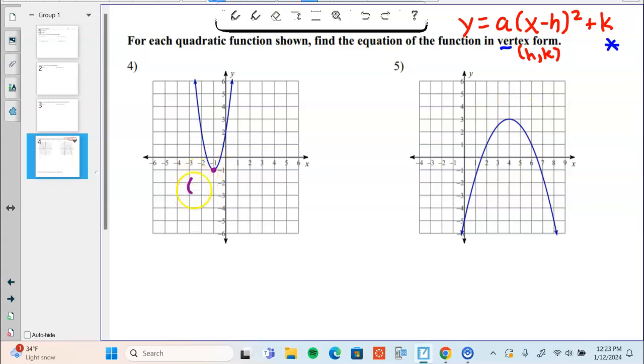I'm going to identify the vertex: negative one, negative one. What I have done is I've identified the h and the k, so the only thing that's missing is the a. I'm going to write down what I have right now: y equals a times x minus negative one, which becomes x plus one squared, and adding negative one becomes subtract one.